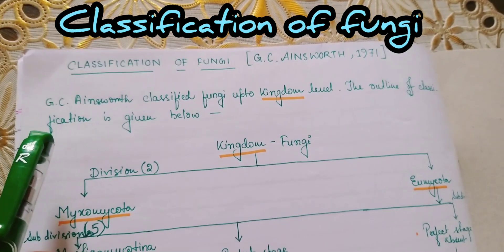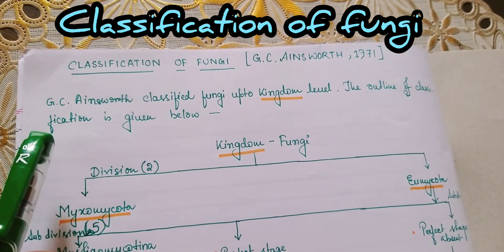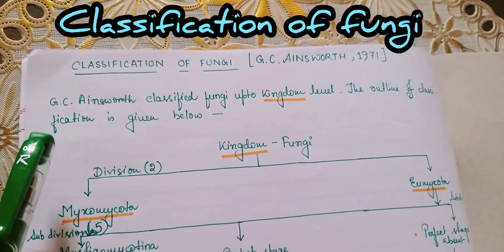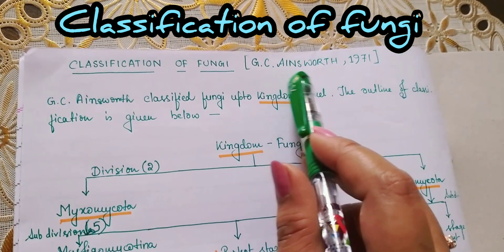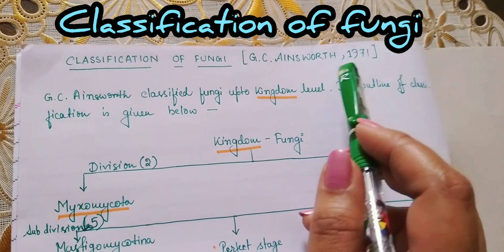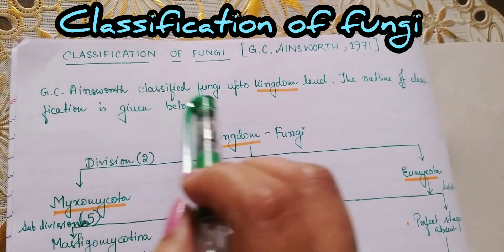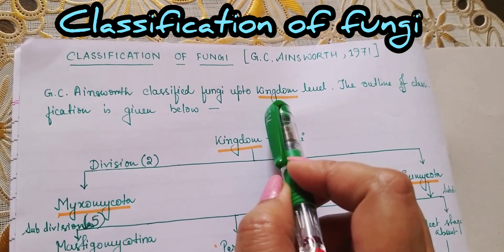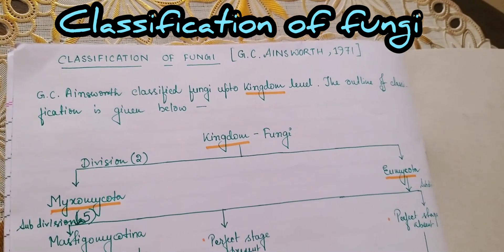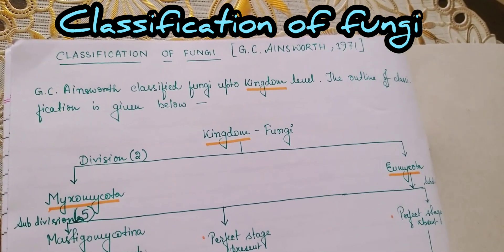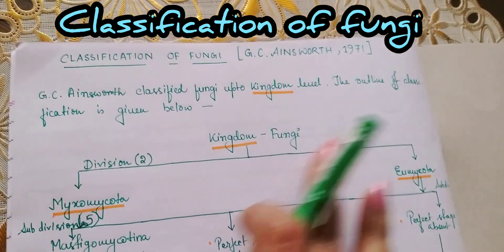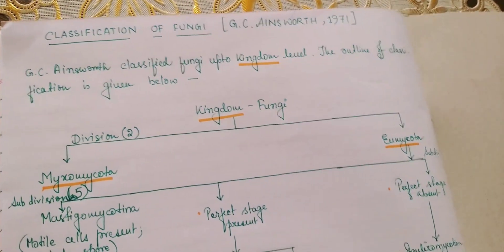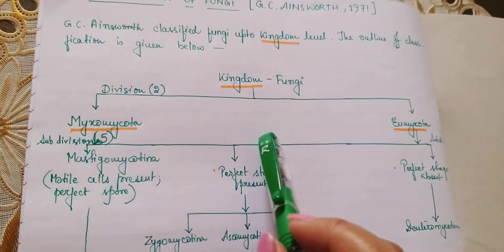Hello everyone, a very warm welcome to all of you in my mycology class. I'm Dr. Arpita and the topic for today's discussion is classification of fungi by G.C. Ainsworth, 1971. G.C. Ainsworth classified fungi up to the level of kingdom. He treated fungi in a separate kingdom or a sub-kingdom of plant kingdom. Here is an outline of classification we are going to discuss.